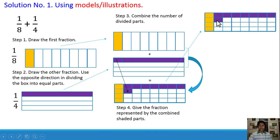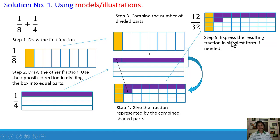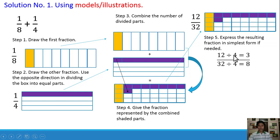So we can say that it is 12 out of 32. Step number 5: express the resulting fraction in simplest form if needed. Since 12 over 32 is not yet in the lowest terms, we are going to reduce it. We have 12 divided by 4 and 32 divided by 4, because 4 is the GCF of 12 and 32. So we have 3/8.